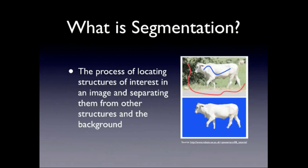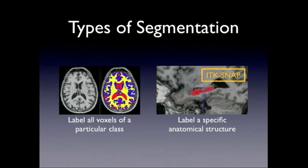As probably all of you know, since you're interested in ITK-SNAP, segmentation is a way of labeling some things of interest in your images — separating something that you want to measure or represent quantitatively from everything else in an image. Very broadly speaking in medical imaging, there are two styles of segmentation. One is tissue classification, where you label all different tissue types in an image, versus segmentation focused on a specific anatomical structure, specific lesion, or specific tumor in the data.